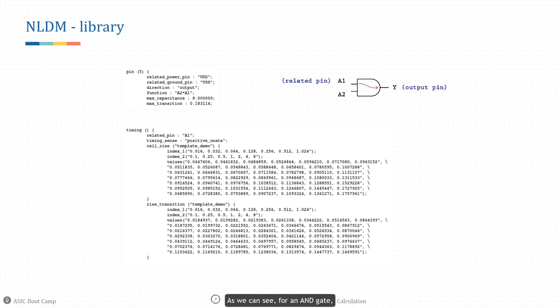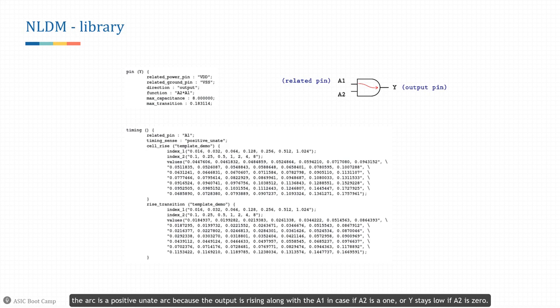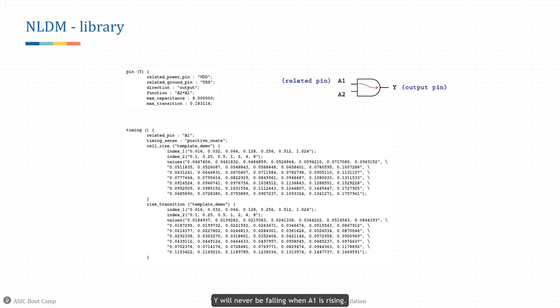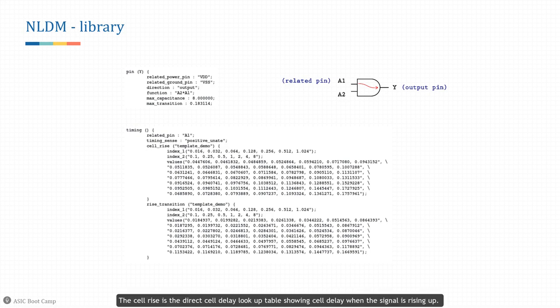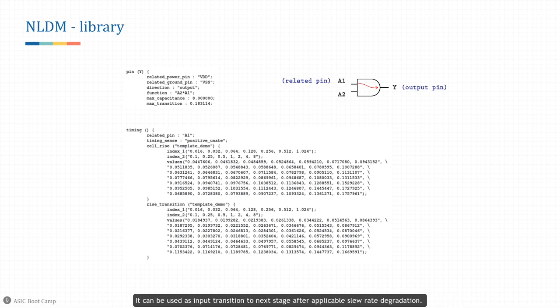For an AND gate, the arc is a positive unate arc because the output is rising along with A1 in the case where A2 is 1, or Y stays low if A2 is 0 — Y will never be falling when A1 is rising. Note that there are two tables: cell rise and rise transition. The cell rise is the direct cell delay lookup table showing cell delay when the signal is rising; it uses input transition and output load as indexes to interpolate the cell delay. The rise transition table describes the output transition time based on input transition and output load.